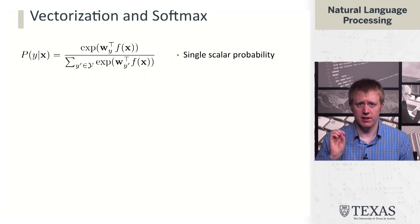I want to make the data types of all of these things pretty clear because we're going to be vectorizing these operations. We're going from a computation that returns a single scalar probability to a computation that returns a vector of probabilities.